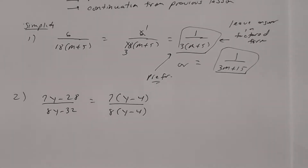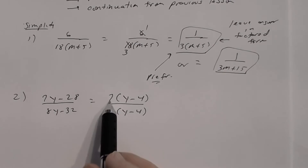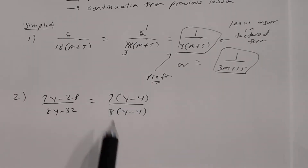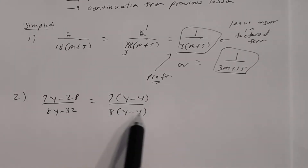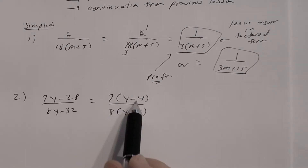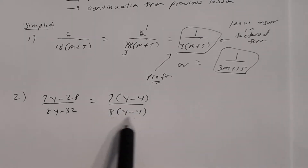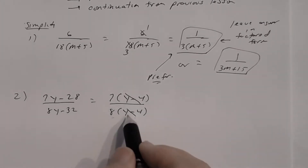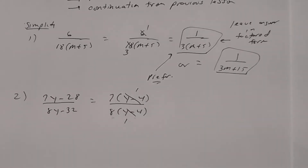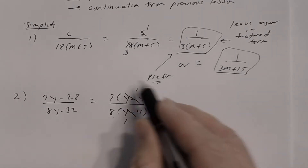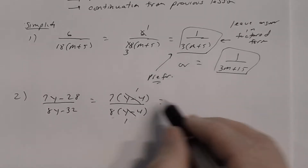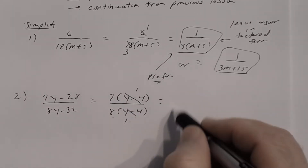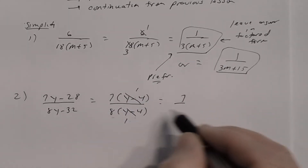Step two is to divide out common factors and reduce. The numerator has two factors: 7 and (y − 4). The factor 7 doesn't reduce with 8. The factor (y − 4) matches in the denominator, so those divide out, leaving factors of one. The final answer is 7 divided by 8.